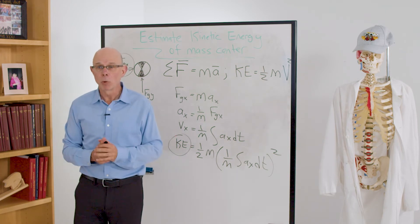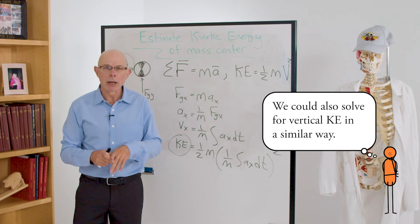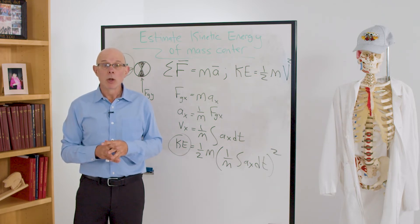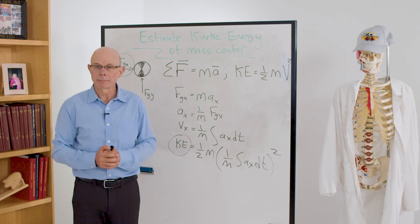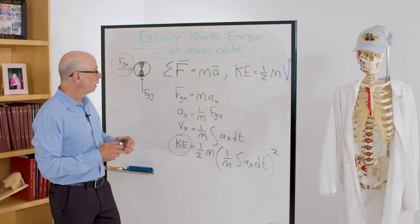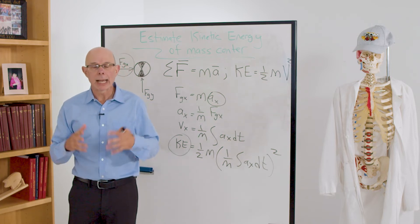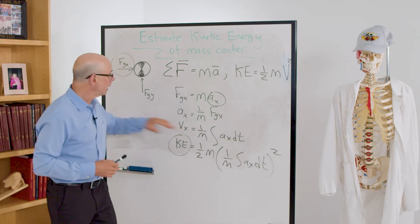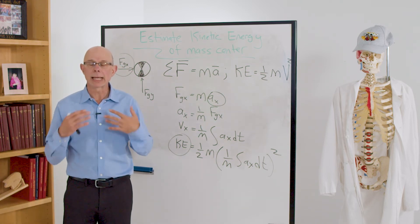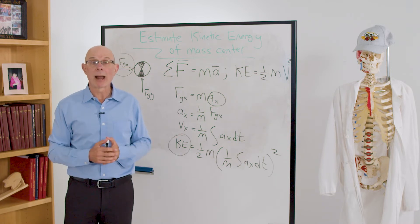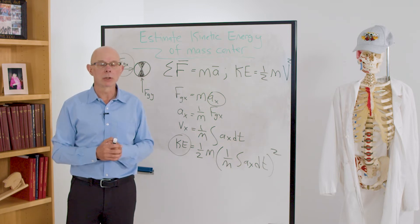We can do exactly the same thing for vertical kinetic energy. We also want to know gravitational potential energy, which is related to the height of the mass center from the floor. To get the position of the mass center, we integrate the acceleration twice — first to get velocity, second to get position — by integrating the vertical ground reaction force twice. With that, we can derive gravitational potential energy. This problem is solved in the biomechanics and movement textbook.